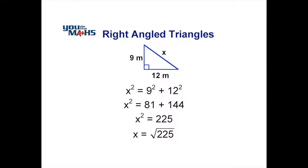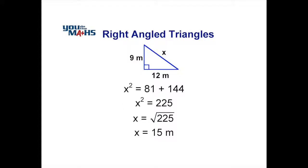Using a calculator, we can find out then the square root of 225. When we do this, we get an answer that x, or the hypotenuse, is equal to 15 metres.